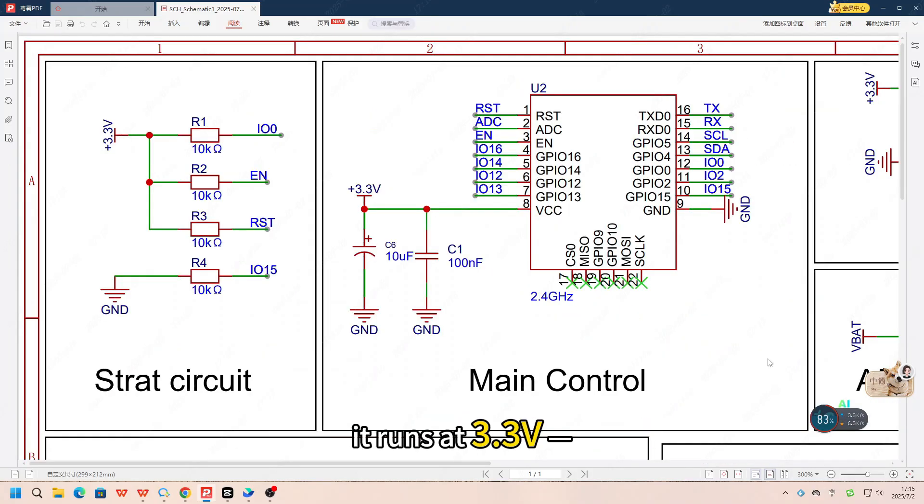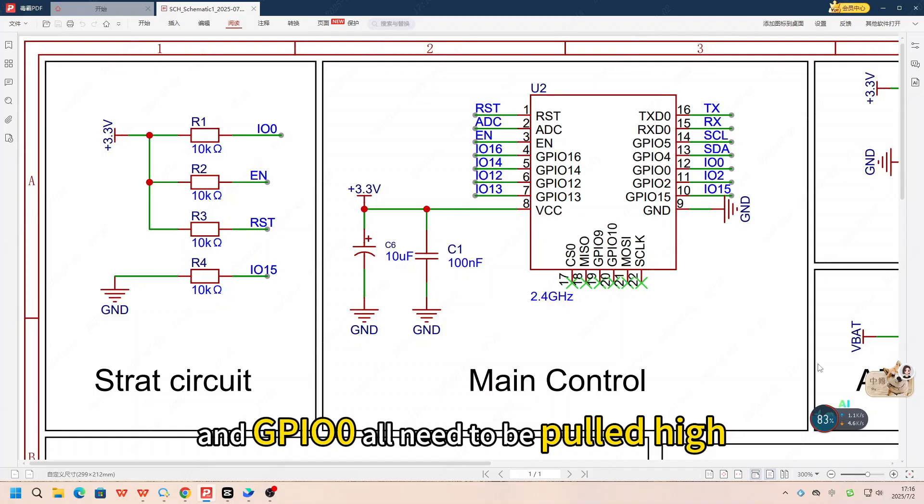Let's take the ESP8266 as an example. According to the datasheet, it runs at 3.3V. If you power it with 5V, you'll likely burn it out. In normal operation, EN, RST, GPIO15, and GPIO0 all need to be pulled high.